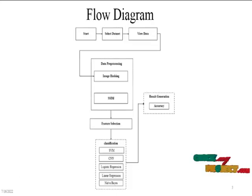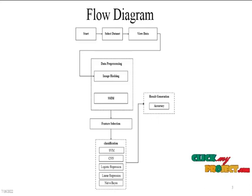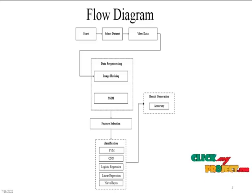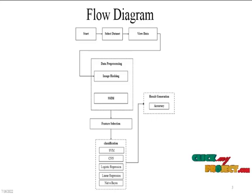The flow diagram of the project: first we start the program and select the dataset, then view the input images, and after that apply data pre-processing. In data pre-processing we hash the images — reading the original image and copy move image — to find the copy move region from the original and copy move images. After that we check the SSIM score between original images and also between the original image and the copy move image.